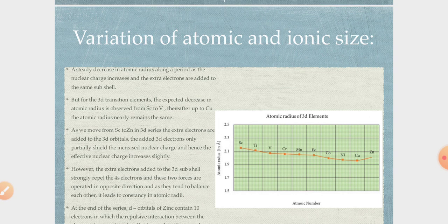The first property is metallic behavior. The next property is variation of atomic and ionic size.